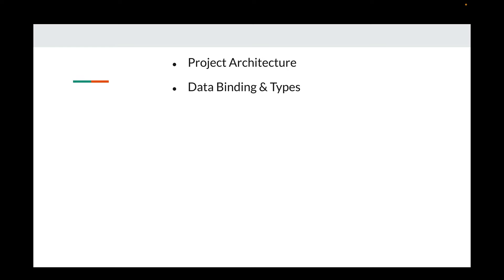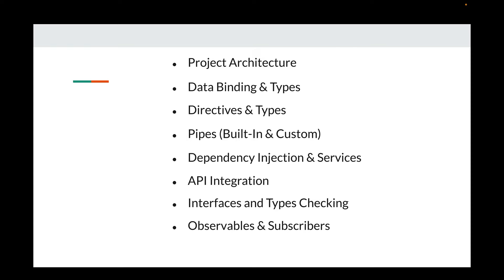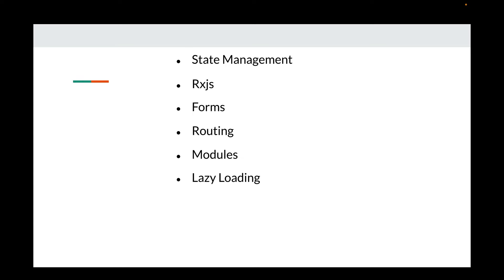The major topics I'll be covering in this tutorial series include project architecture, data binding and types, directives, pipes, dependency injection, services, API integrations, interfaces, type checking, observables and subscribers. Control flow is newly redesigned in Angular 17. I'll also cover state management with NgRx, RxJS, forms, routing, modules, lazy loading, Angular Material, projects, and deploying Angular applications on different platforms.